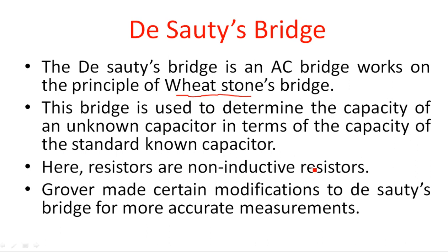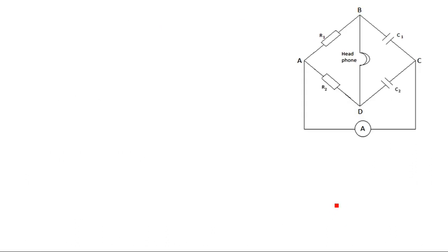The resistors used here are non-inductive, meaning they are pure resistors. Grover made certain modifications to the De Sauty Bridge for more accurate measurements, since the basic standard De Sauty Bridge may not give proper values. The bridge has four arms: the first and second arms consist of resistors, while the third and fourth arms have only capacitors.